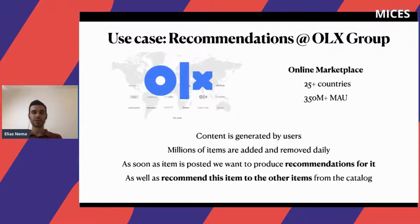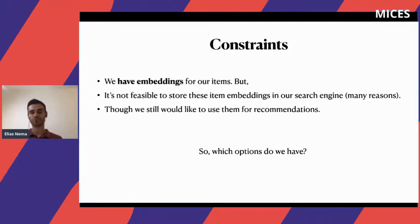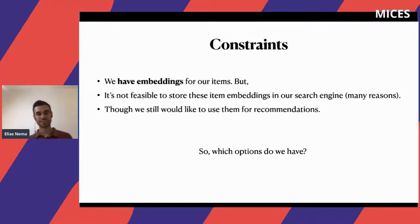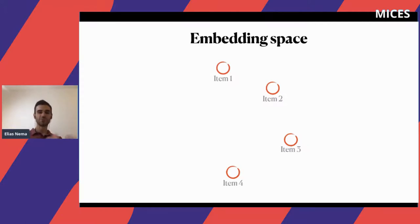In recommendations, as soon as an item is posted, we want to have recommendations for it. We also want to recommend that item to other items already in the catalog. Our constraint is that we have embeddings for our items, but it's not feasible to store item embeddings in our search engine for many reasons — mostly technical, but also about implementation costs. So we still want to use item embeddings for recommendations — what options do we have, and how can we avoid putting them into Solr?